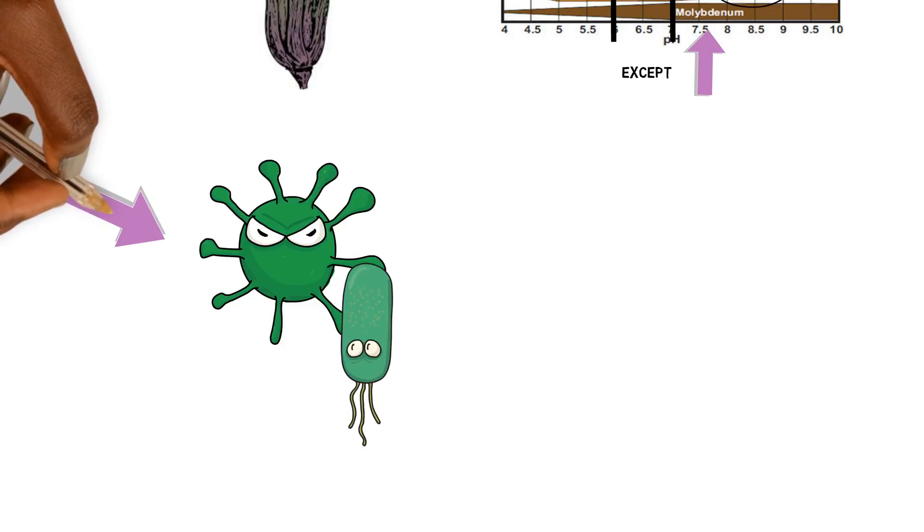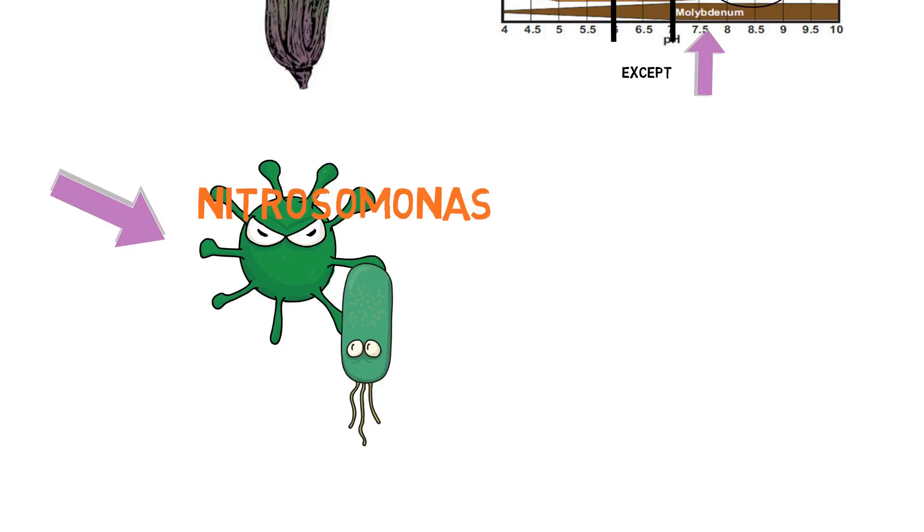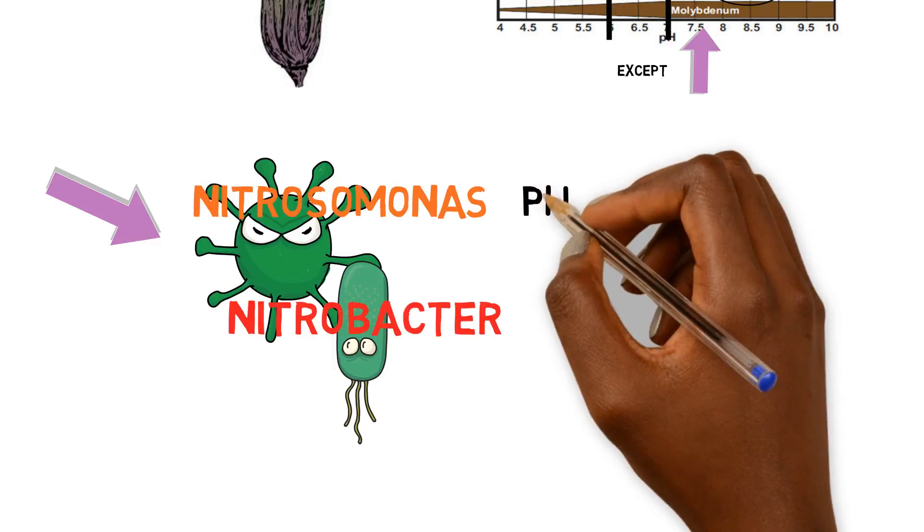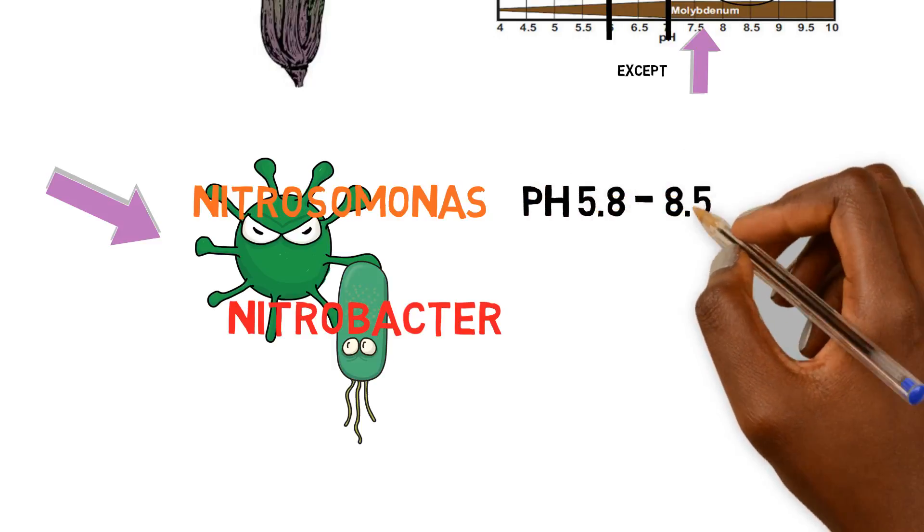Our nitrifying bacteria, primarily made up of Nitrosomonas, which is the ammonia oxidizing bacteria, and Nitrobacter, which is the nitrite oxidizing bacteria. We need to find out their optimal operating range. So Nitrosomonas typically operates in a pH range from 5.8 to 8.5.